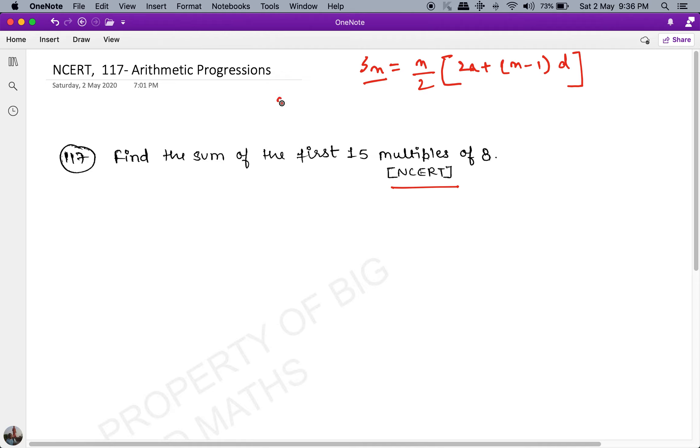And n = 15 because you have to find the sum of the first 15 multiples of 8. a = 8 because the first multiple of 8 is 8. And d is also equal to 8 because amongst all the multiples of 8, the common difference is going to be 8.